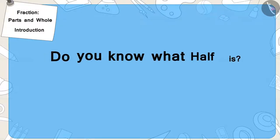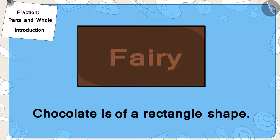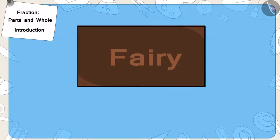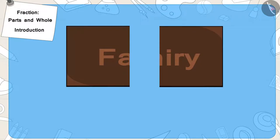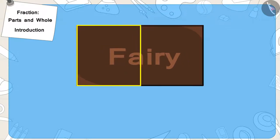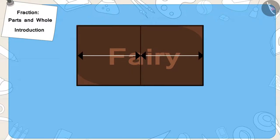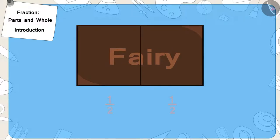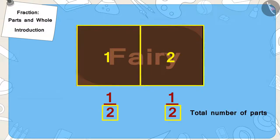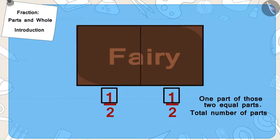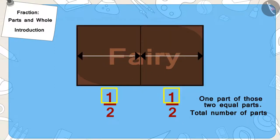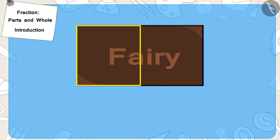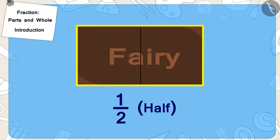Children, do you know what half is? Suppose Bunny's chocolate is of a rectangle shape. Now, if we divide it into two equal parts like this — this part is one part of these two equal parts. We can also write it as a fraction in this way. Two is the total number of parts and one is one part of those two equal parts. We also call this half of the whole chocolate.